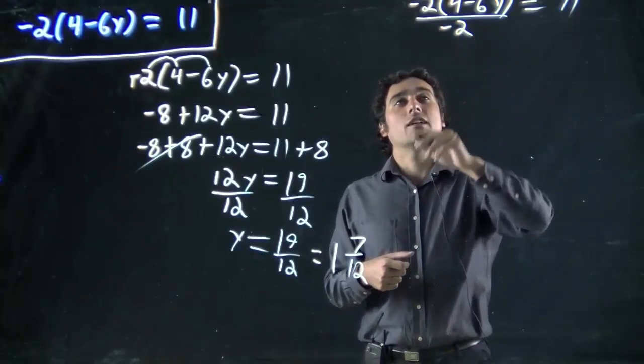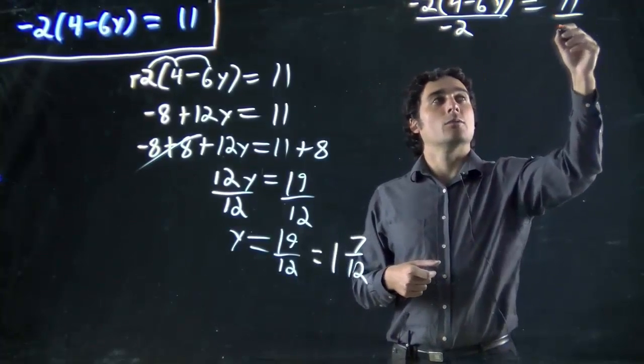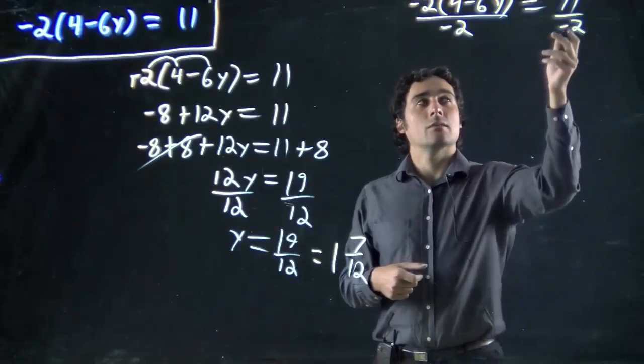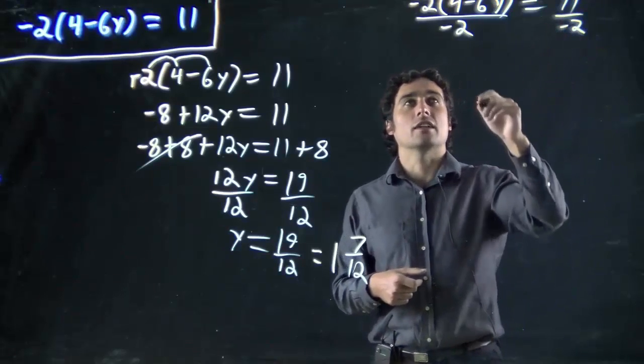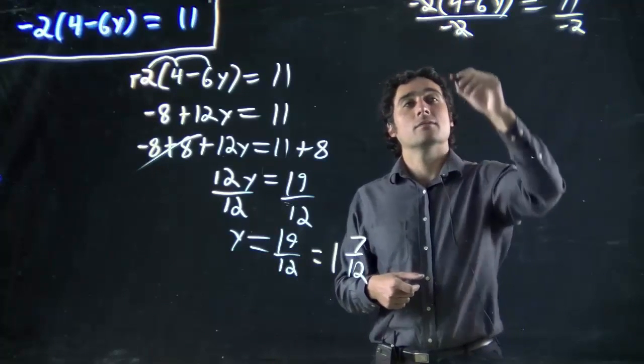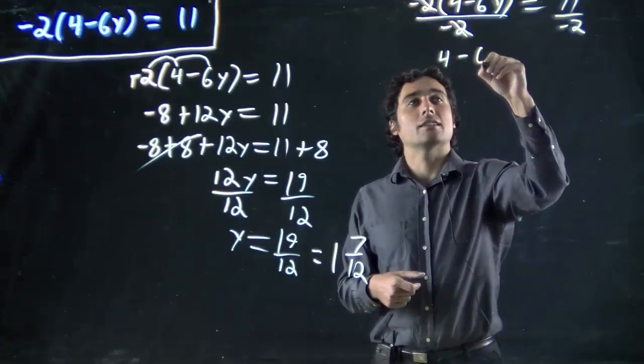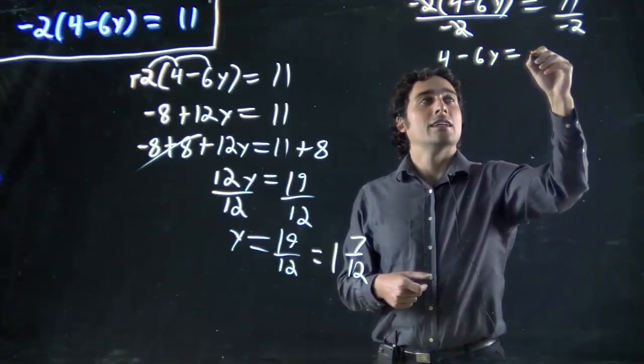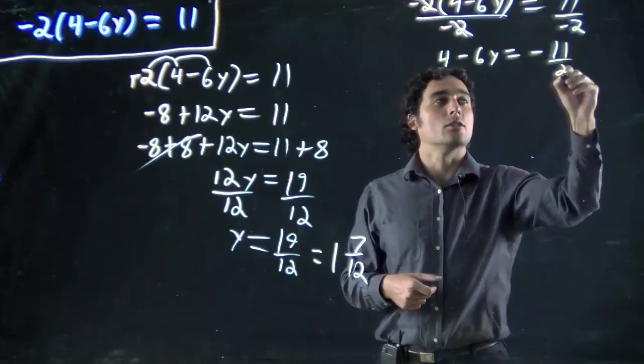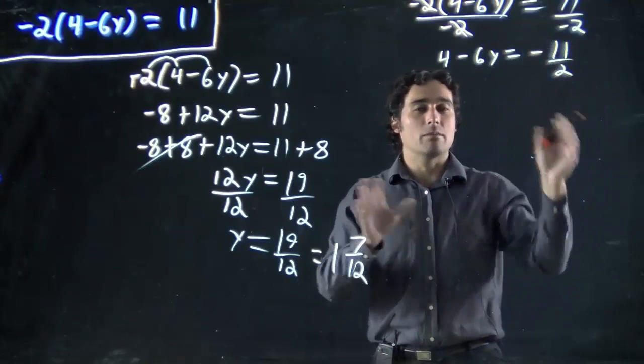So, if we get rid of the minus 2, we'll be able to get rid of the bracket. But again, we've got this weird ugly fraction over here now. But these at least cancel. And we're left with 4 minus 6y equals minus 11 over 2. A minus on the bottom and minus on the top mean the same thing.